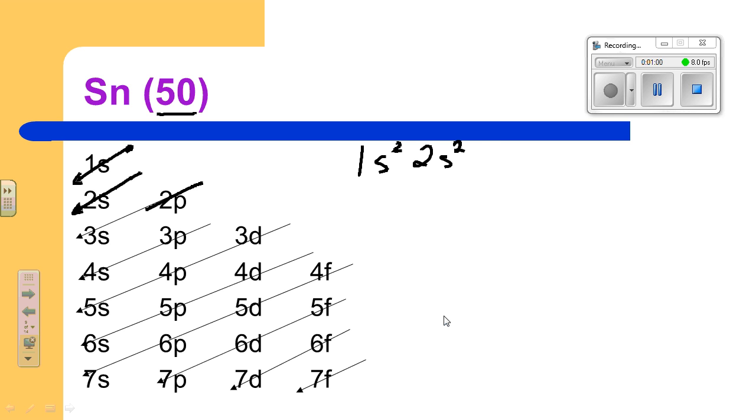So next, 2p, and remember, p can hold 6. And continue on through 3s, 2. If you want we can stop here. At this point we have done 12 electrons.